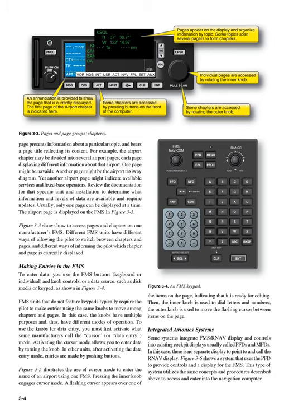In this case, the knobs have multiple purposes and, thus, have different modes of operation. To use the knobs for data entry, you must first activate what some manufacturers call the cursor, or data entry, mode. Activating the cursor mode allows you to enter data by turning the knob. In other units, after activating the data entry mode, entries are made by pushing buttons. Figure 3-5 illustrates the use of cursor mode to enter the name of an airport using one FMS.